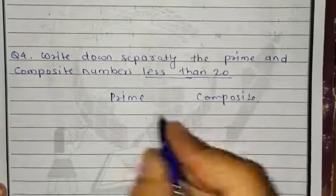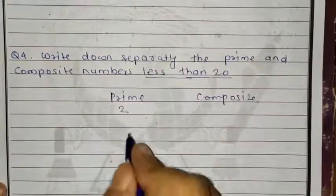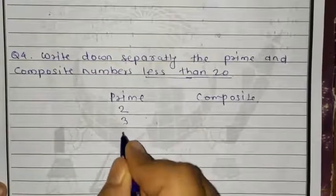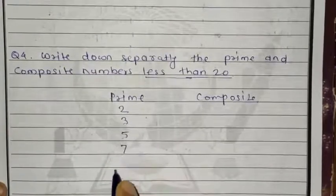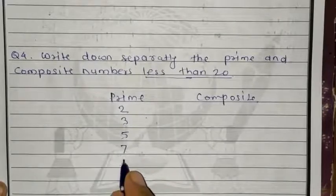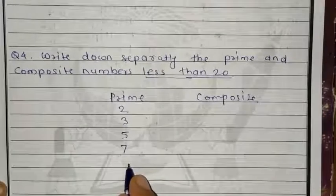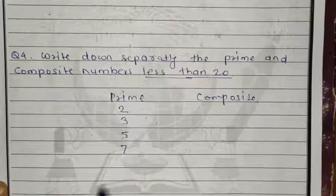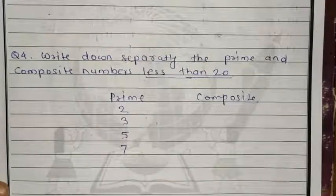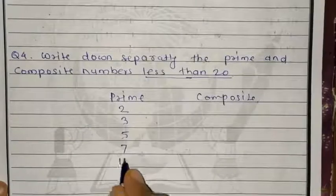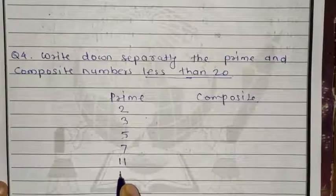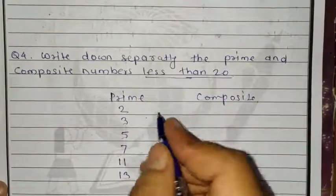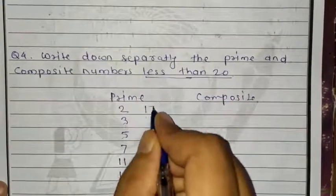Prime numbers start with 2, then 3, then 5, then 7. 8 and 9 are not prime — 9 can be divided by 3, so 3 is a divisor. Next is 11, then 13. 14 and 15 are not prime. 16 is also not prime. 17 is prime. And 19 is prime.